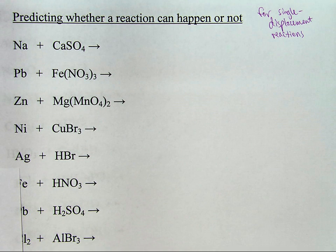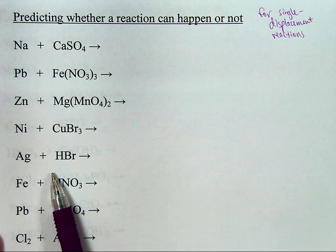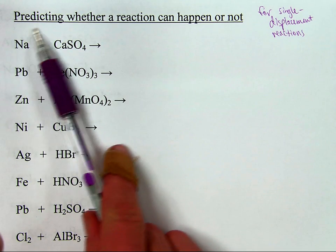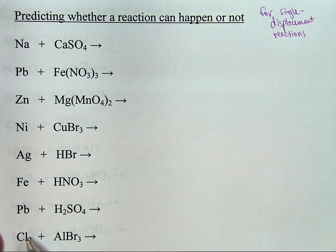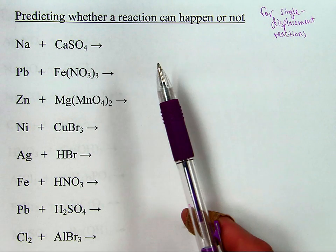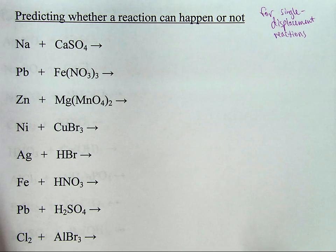Time to have a look at single displacement reactions, how you predict whether or not a single displacement reaction can happen. Because for any of these chemical combinations, you can predict the element switching place with the other element that's either similarly positive or similarly negative, and you can predict what it would make. But just because you can predict it on paper doesn't mean it will actually happen. So let's talk about how you actually predict whether or not this would happen, if the chemical reaction is even possible.